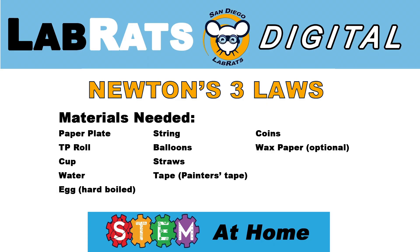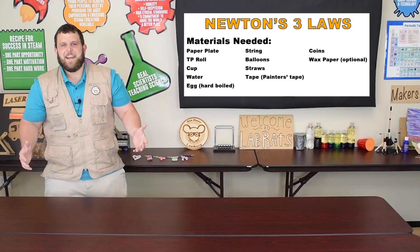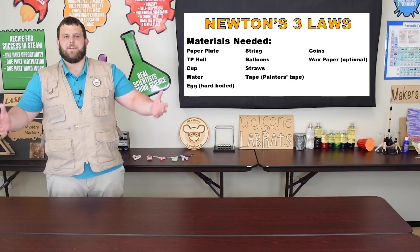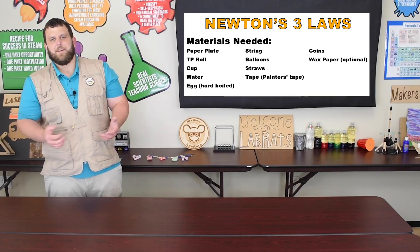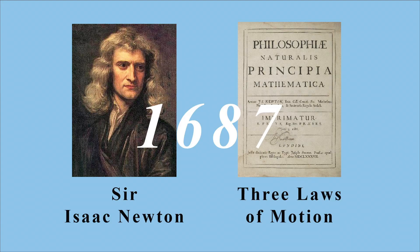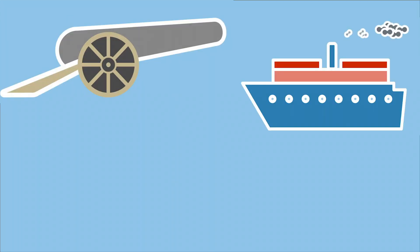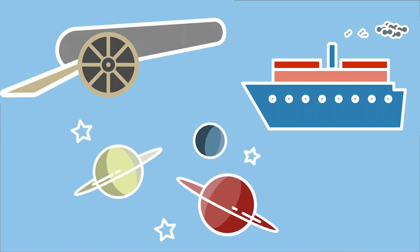Welcome to Lab Rads. Thanks for joining us for another episode of STEM at Home, where we bring you fun at-home science labs for your whole family. Today we will be investigating the discovery that started modern science. Many historians will tell you that modern science started in 1687 when Sir Isaac Newton first published his three laws of motion. Newton loved to observe the world around him and was able to explain how everything in the universe moved, from cannonballs and flight to ships at sea to the planets far out in space.